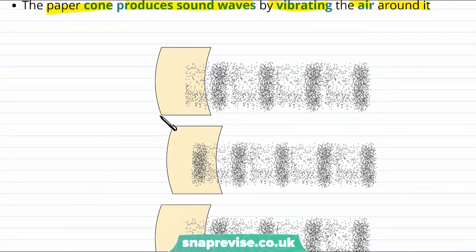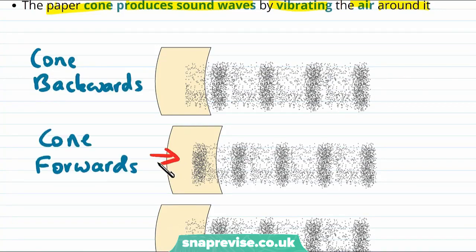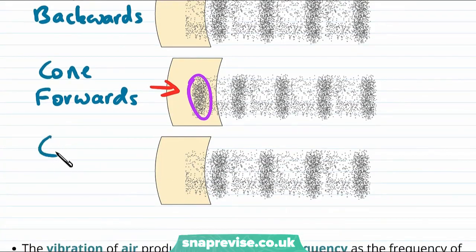If we imagine the first part of the picture here is where the cone has moved fully backwards. So here is our paper cone moving forwards. It pushes all of the air into each other making a compression. The cone then moves backwards again, and as it oscillates backwards and forwards, it creates this set of compressions and rarefactions by vibrating the air.